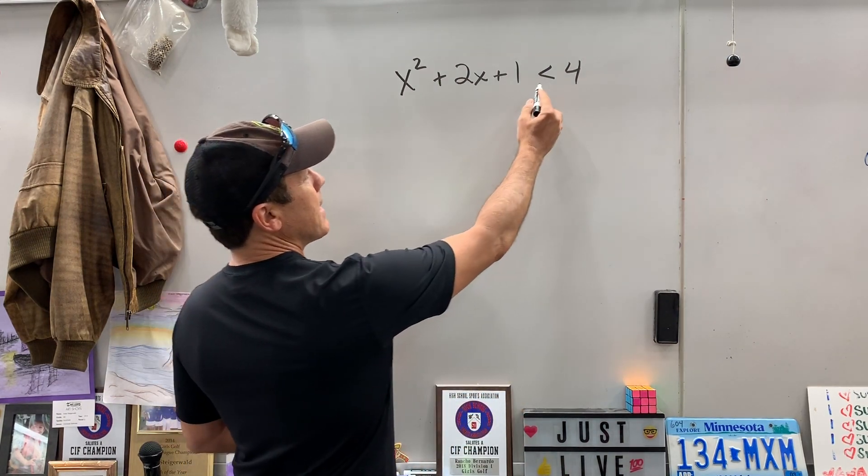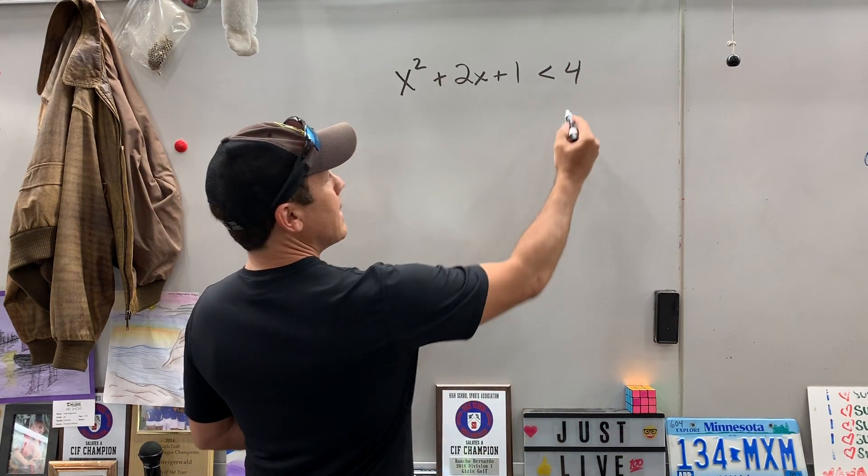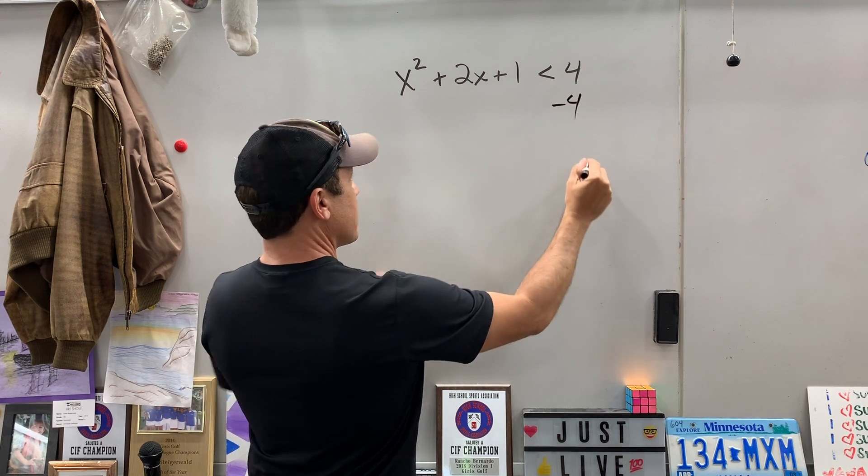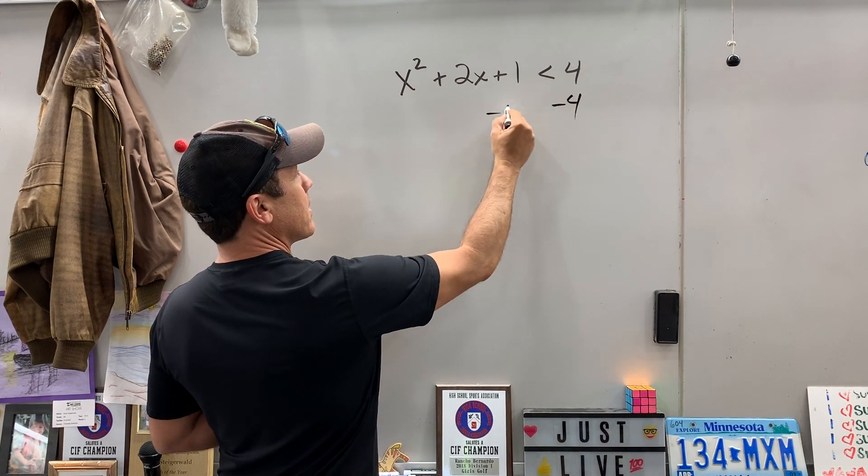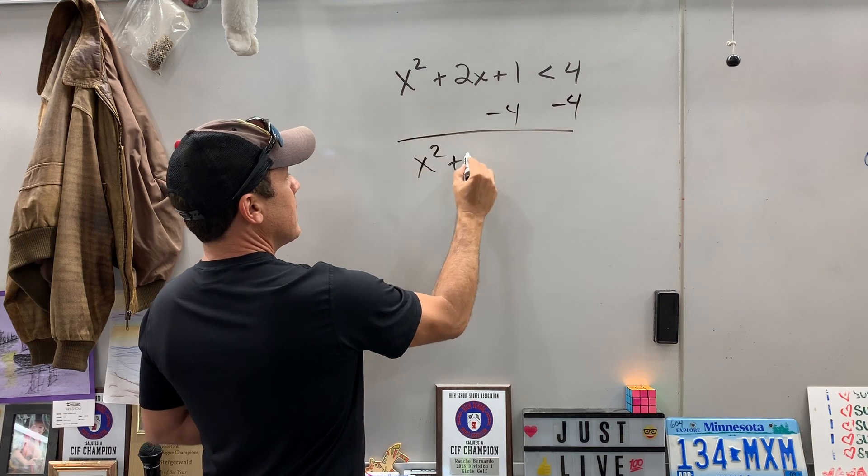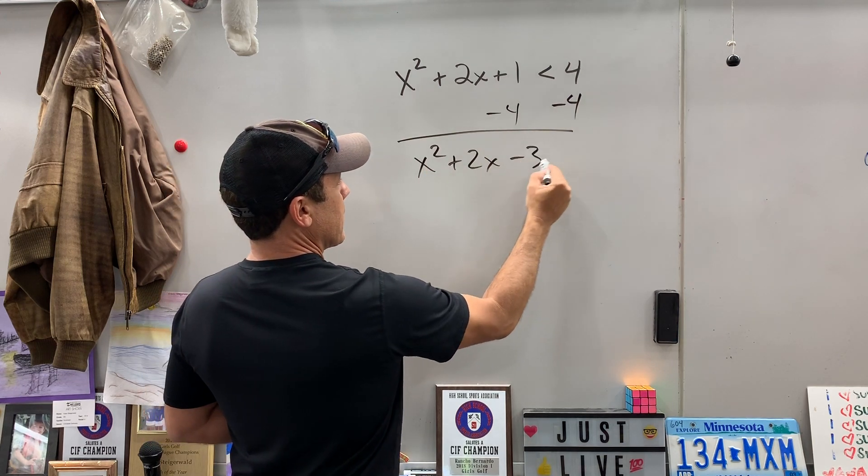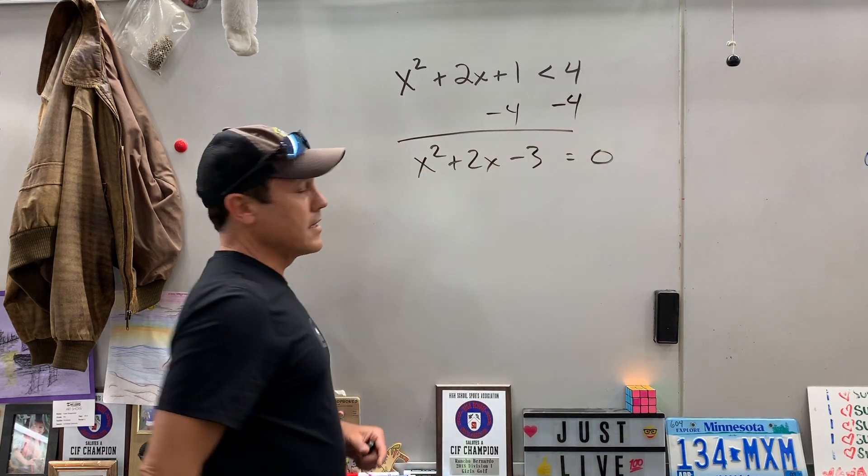First thing you got to do is just pretend that's an equal sign. Can you do that? And you got to set it equal to zero. So there's something on the right side. Let's bring it over here, subtract four. And then what do we got there? So we're just going to pretend it's equal to zero.